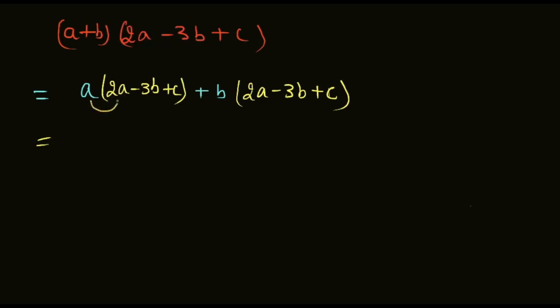We need to multiply each term: a with 2a, then a with minus 3b, then a with plus c. Then same way, b with 2a, b with minus 3b, and b with c. Students, multiply: a into 2a equals 2a squared, a into minus 3b equals minus 3ab.